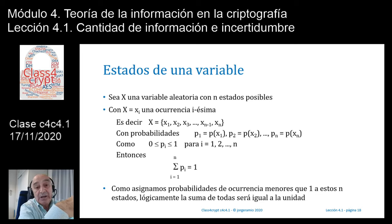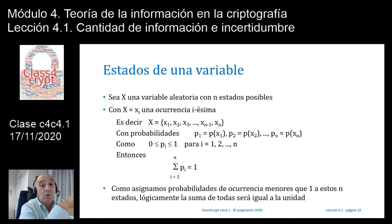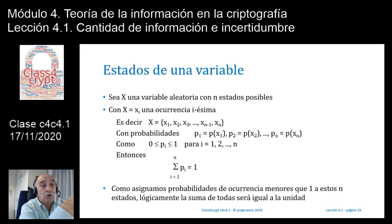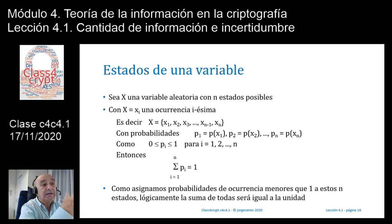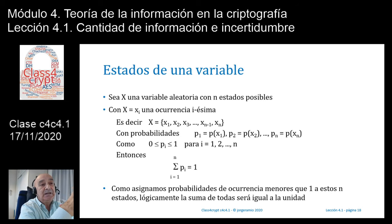Podemos decir, sin temor a equivocarnos, que a mayor incertidumbre hay una mayor cantidad de información, siempre, desde el punto de vista de la probabilidad. La posibilidad de que indicasen una calle en Sevilla sería una entre 4.500; con respecto a las capitales de provincia, sería una entre 50; y con respecto a los países de la península ibérica, sería una entre cuatro. La probabilidad asociada a cada una de las calles de Sevilla va a ser mucho más pequeña y, por lo tanto, la incertidumbre va a ser mucho mayor. Ya que estamos hablando de estados, tenemos que definir una variable aleatoria: X = {x_i}, con n estados posibles, x₁, x₂, x₃, ..., xₙ. Por ejemplo, un dado tiene 6 caras; si no está trucado, cada cara tiene probabilidad de salir de un sexto.